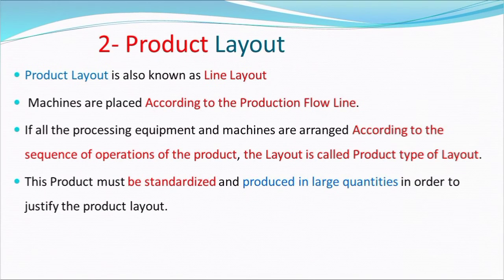The second type is product layout, also known as line layout. In line layout, machines are placed according to the production flow line. If all the processing equipment and machines are arranged according to the sequence of operations of the product, the layout is called a product type of layout. This product must be standardized and produced in large quantities in order to justify the product layout.